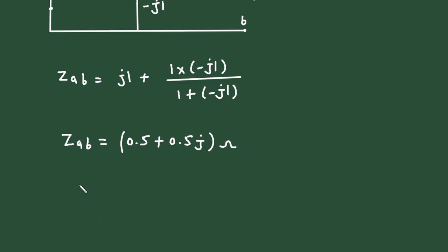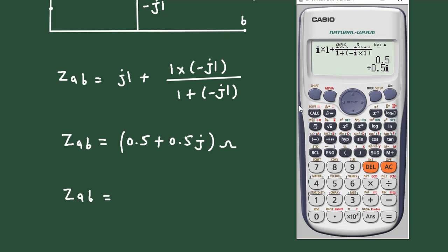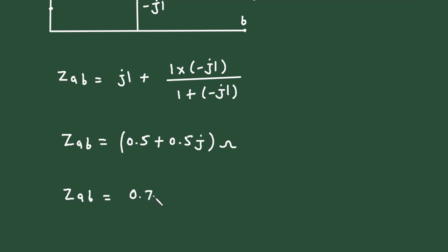And its unit will be ohm. So in polar form, Z_ab is equal to 0.707 at an angle 45 degrees. And since it is impedance, its unit will be ohm.